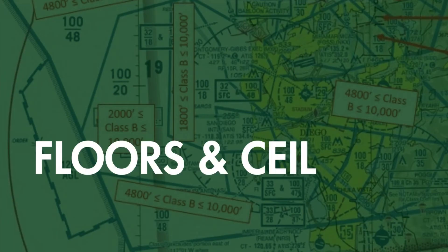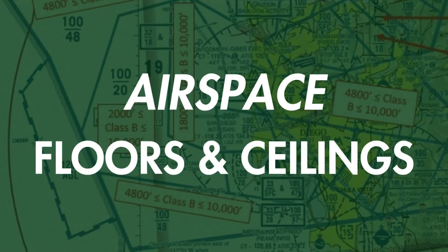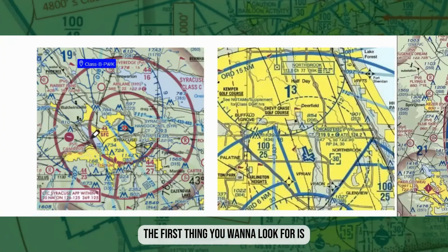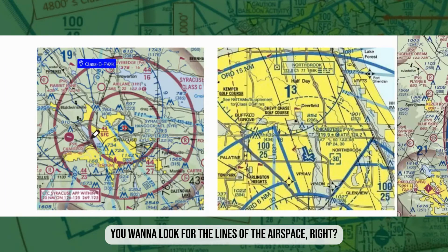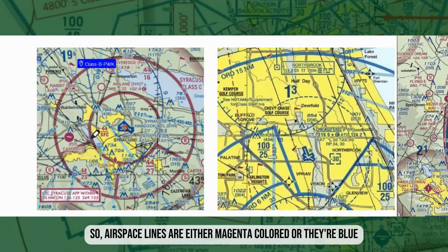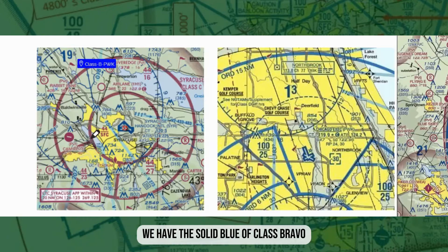Let's talk about the floors and ceilings on an airspace. The first thing you want to look for is the lines of the airspace. Airspace lines are either magenta colored or they're blue.